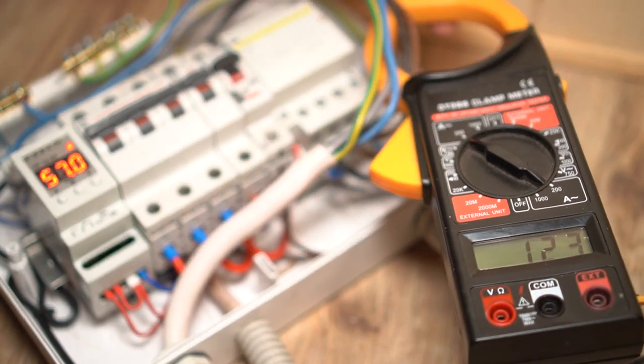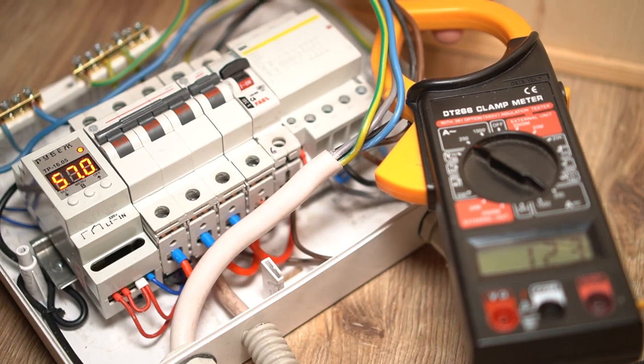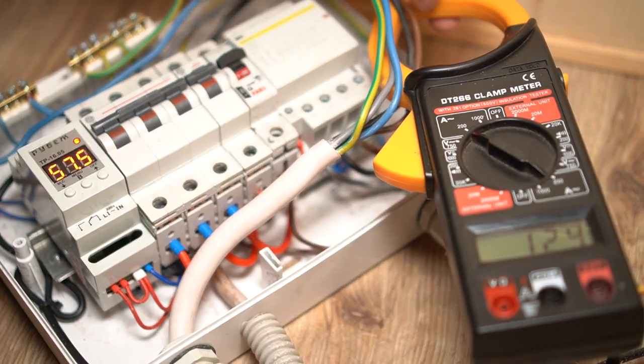As you can see, everything is back to normal. We now have 12 amps per phase, which matches the boiler rating. That's all for today, see you in the next videos.